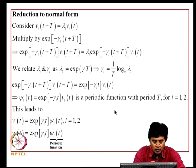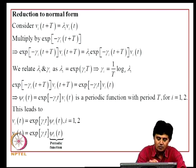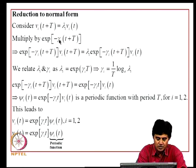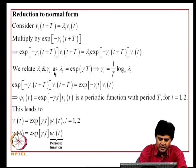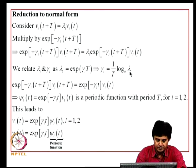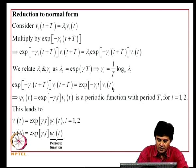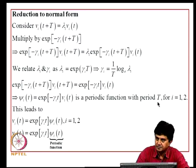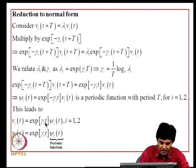To express these results in standard form, starting from Vᵢ(t+T) = λᵢVᵢ(t), we introduce γᵢ such that γᵢ = (1/T)·logₑ(λᵢ). Then Vᵢ(t) = e^(γᵢt)·Ψᵢ(t), where Ψᵢ(t) = e^(-γᵢt)·Vᵢ(t) is periodic with period T. So the solution is expressed as a periodic function multiplied by an exponential factor that can be decaying, growing, or purely oscillatory.